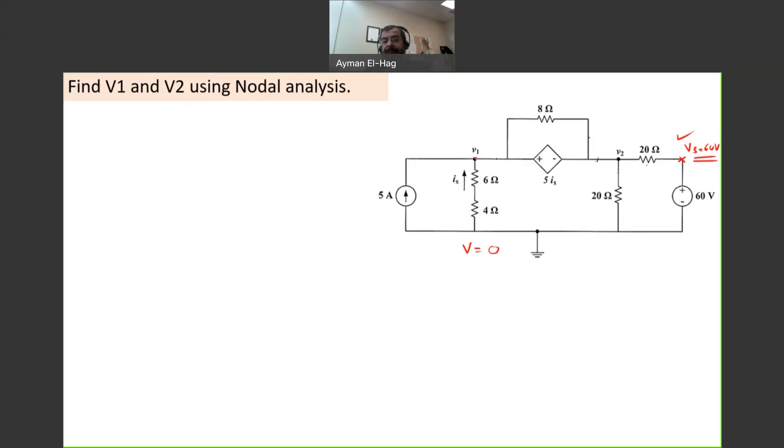The first thing is that the voltage difference between V1 minus V2, which is the voltage difference between this point and this point, is actually this voltage supply. Remember, this is a voltage supply, not a current supply, although it depends on a current. How do I know? Because the plus minus sign. So V1 minus V2 is equal to 5*Ix, and this is my first equation.